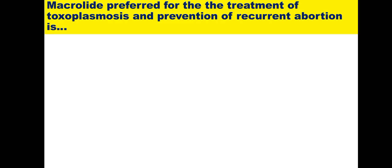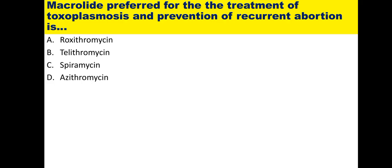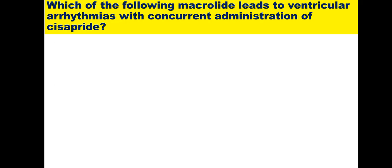Tenth: which macrolide is preferred for treatment of toxoplasmosis and prevention of recurrent abortion? Options are roxithromycin, telithromycin, spiramycin, and azithromycin. Spiramycin is the agent used for treatment of toxoplasmosis, which is responsible for recurrent abortion, and it is the preferred macrolide agent. So the answer is spiramycin.